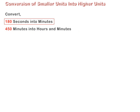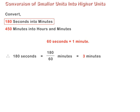Friends, we know that 60 seconds are equal to 1 minute. Therefore, to convert 180 seconds into minutes, we divide it by 60. Thus, 180 seconds are equal to 3 minutes.